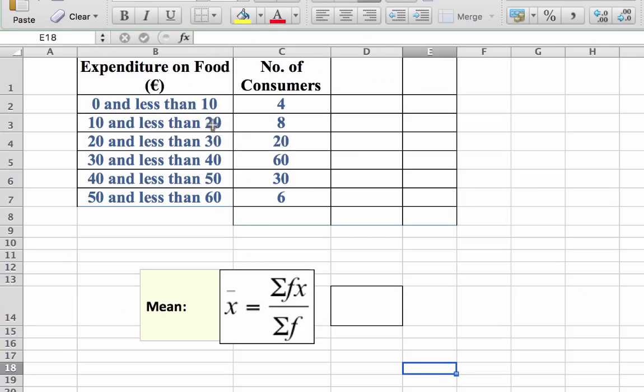What we have here is the table known as a grouped frequency distribution table, where we have expenditure on food in the first column and the number of consumers in the second.